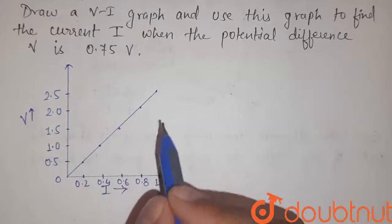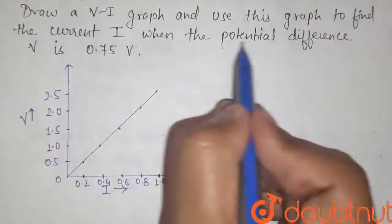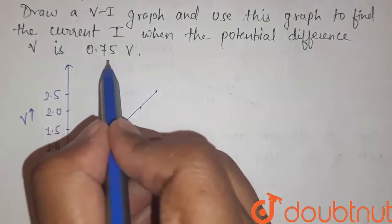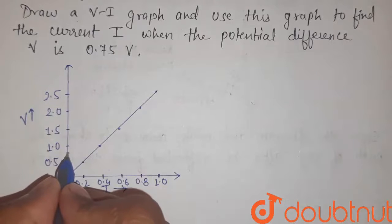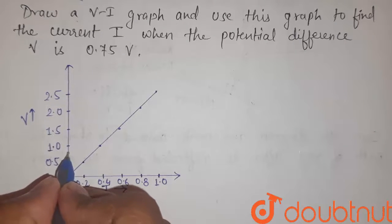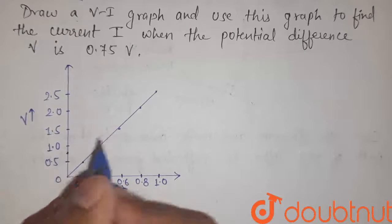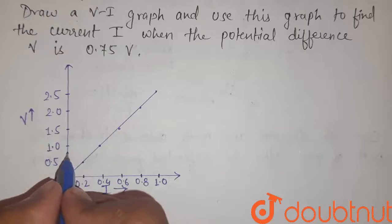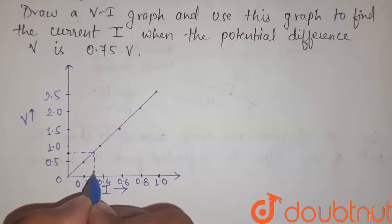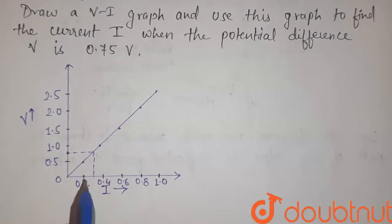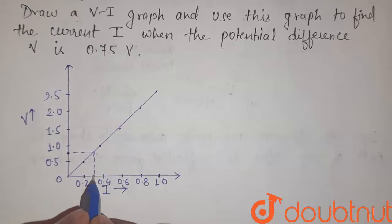Now what we have to do? We have to find the value of current when the value of potential difference is 0.75V. So 0.75 will be here. Now corresponding to this value, we have to find the value of I. So for this we have to join through this and for this. Now we have to find this value.